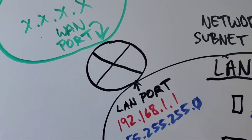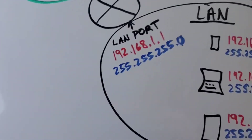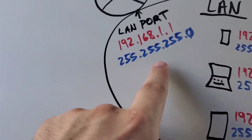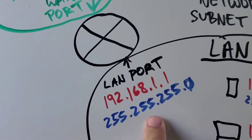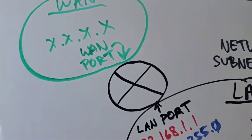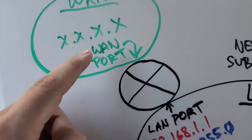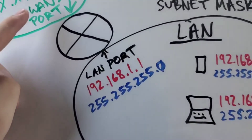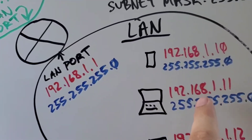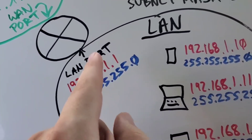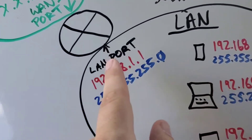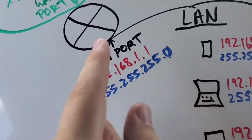It's important to note that your default gateway is your LAN port on your router — it is not the WAN port. The default gateway is always how you get outside of this network, and it's always the LAN IP address.